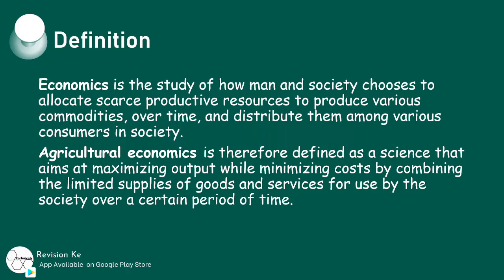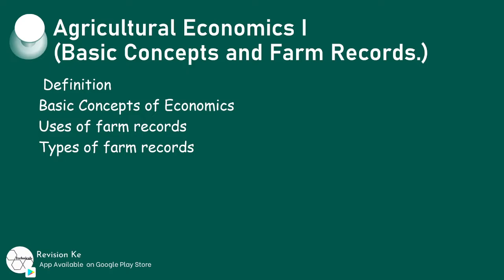Economics is a study of how man and society chooses to allocate scarce productive resources to produce various commodities over time and distribute them among various consumers in society. Agricultural economics is therefore defined as a science that aims at maximizing output while minimizing costs by combining the limited supplies of goods and services for use by the society over a certain period of time.